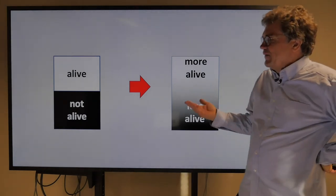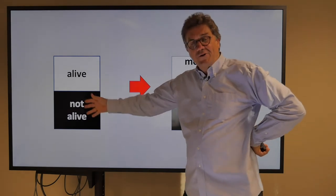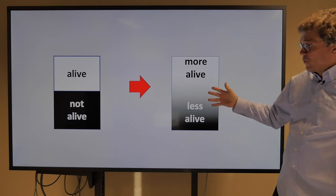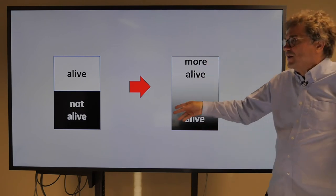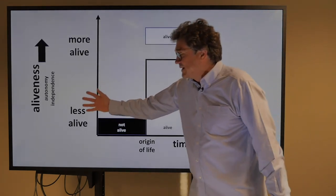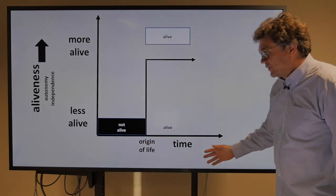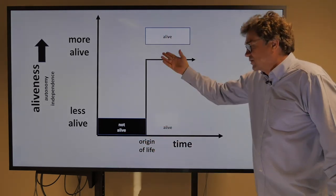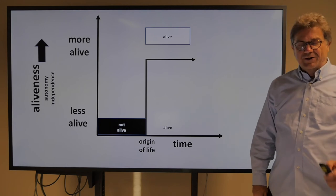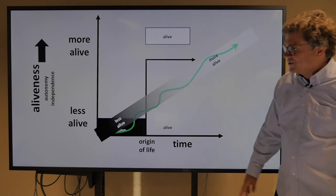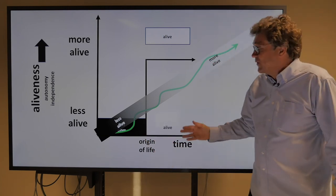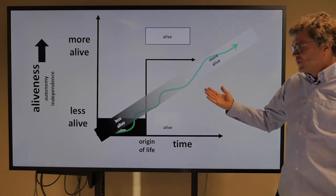That's interesting, because usually we have the idea that something is either alive or not alive — binary, black and white. But maybe it's better to replace that with a gray scale: something could be more alive or less alive. If we plot aliveness as a function of time, we can have the origin of life where everything starts — but maybe it makes more sense to think of it as a gradual increase: less alive, then more alive, more alive, more alive, with no specific threshold event. So when we talk about the origin of life, where do you put it in this scenario?